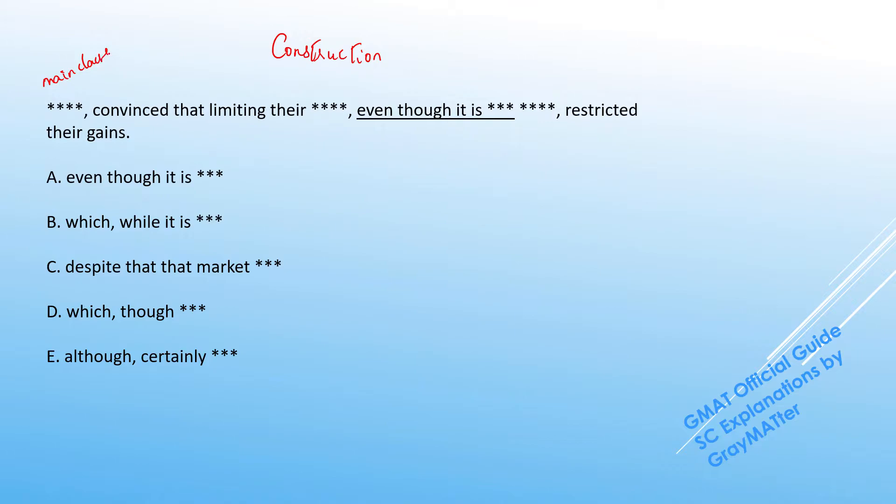Now after the main clause here we have a comma and convinced. So this becomes a past participle modifier. Now convinced that something is happening. When you say convinced that, this that signals the start of a that clause. Now how do we write that clauses?